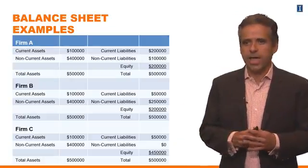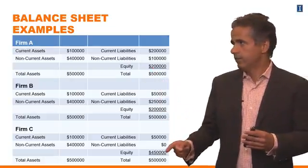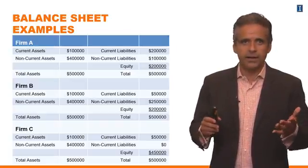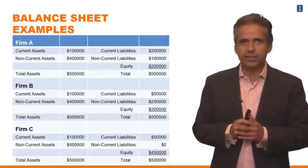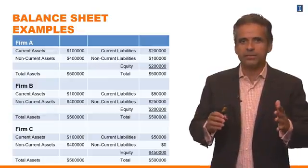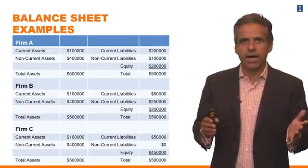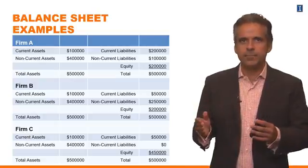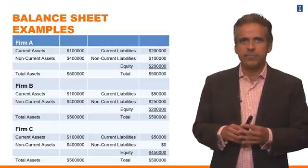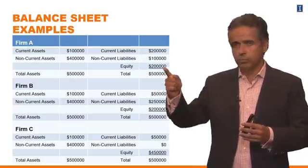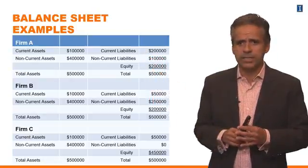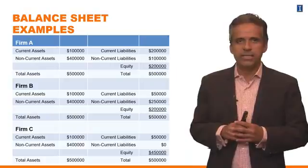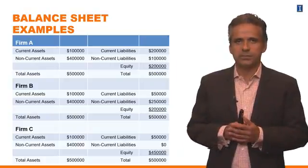We have Firm A, Firm B, and Firm C. Here you can see a snapshot of their balance sheets. A real-world balance sheet is going to have many more items than that; here we just have the basic items: assets and liabilities, split into current and non-current. We also have information on the equity, which is the difference between assets and liabilities.